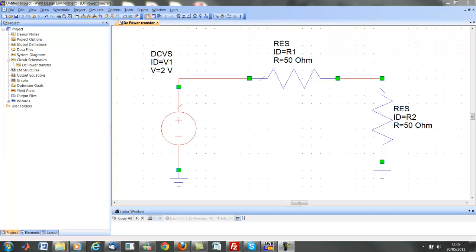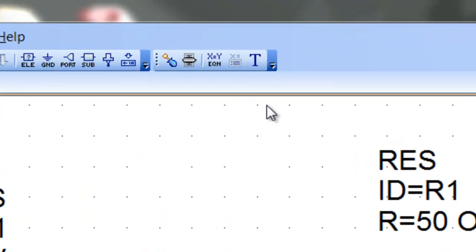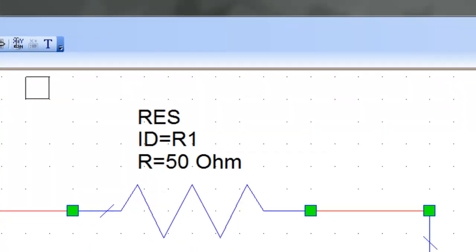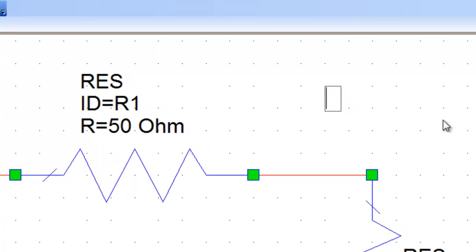In order to do this, first of all we have to declare a variable. We'll assign this variable to the element whose value we want to sweep across a specific range. So we click on the equation button on the top row and then place the equation on the schematic. Now all we need to do is choose a name for our variable, we'll call it RSweep, and also assign an initial value to it.